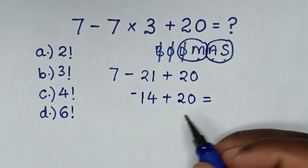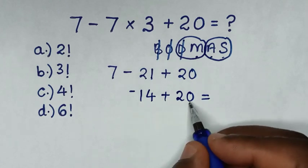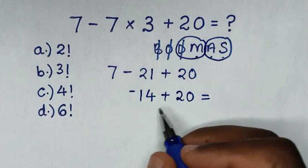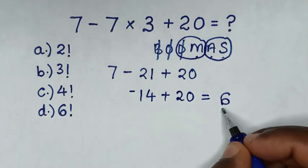So it will be equal to negative 14 plus 20, which is the same as 20 minus 14, which is 6.